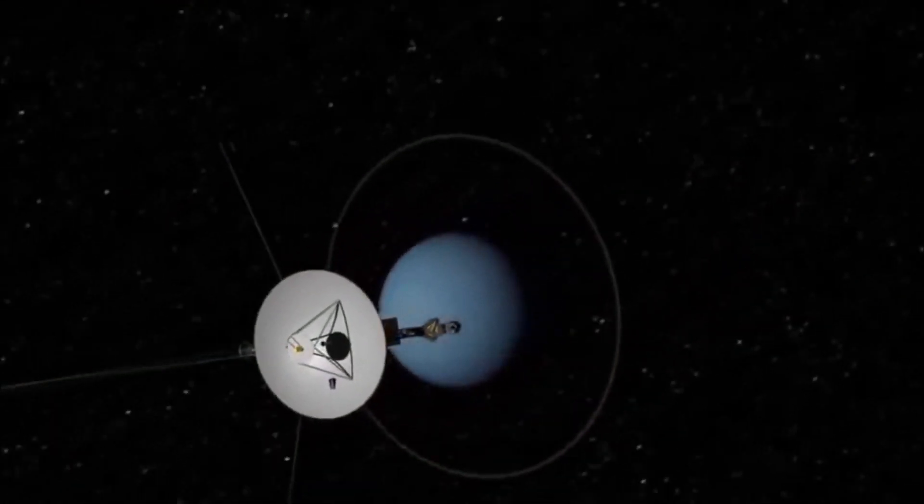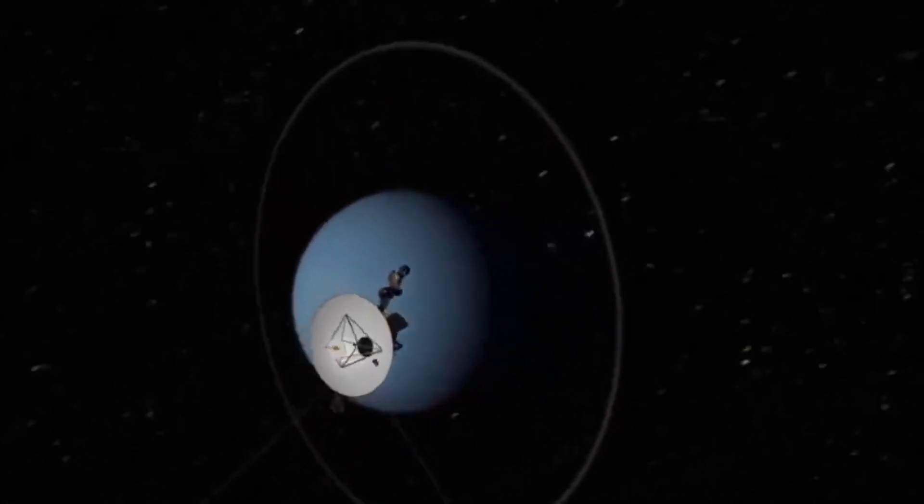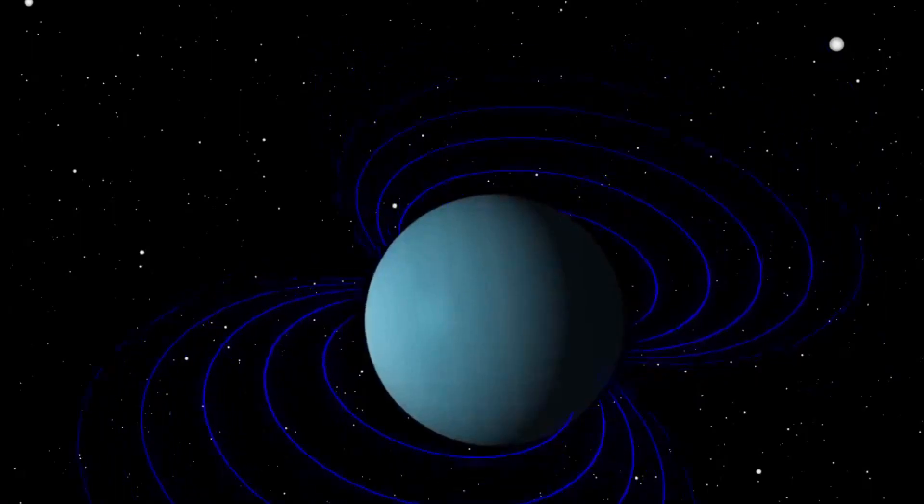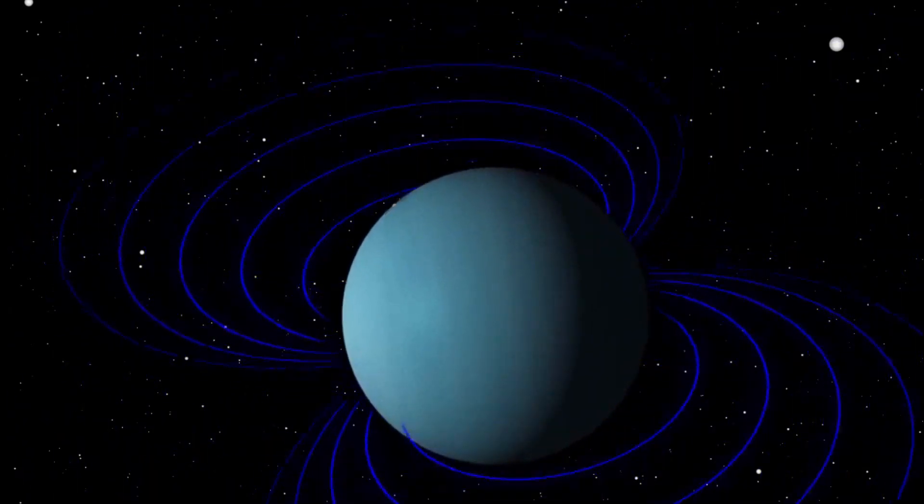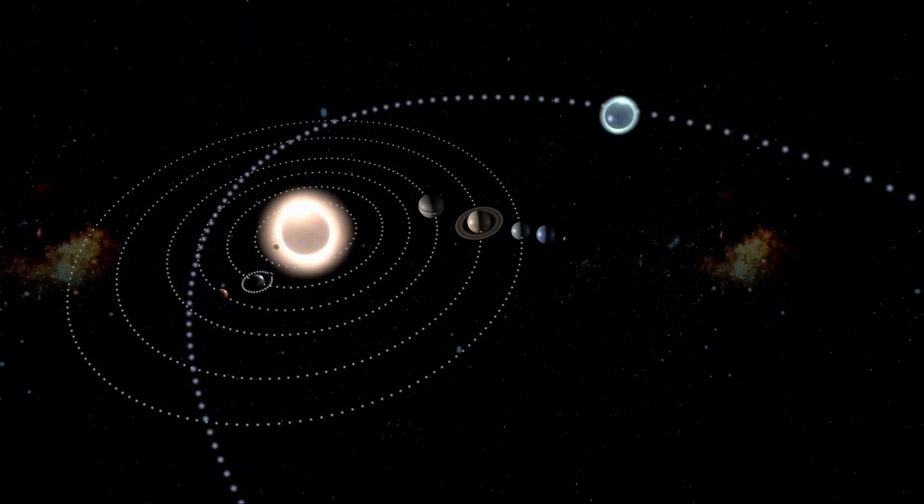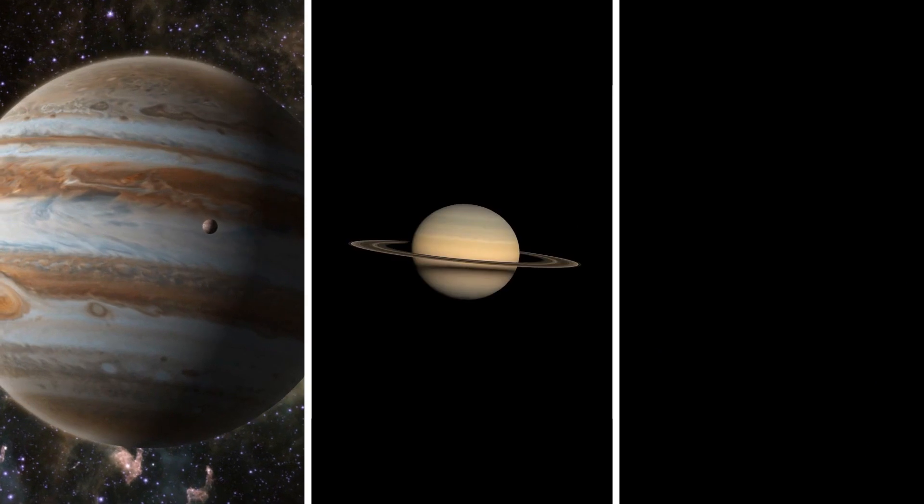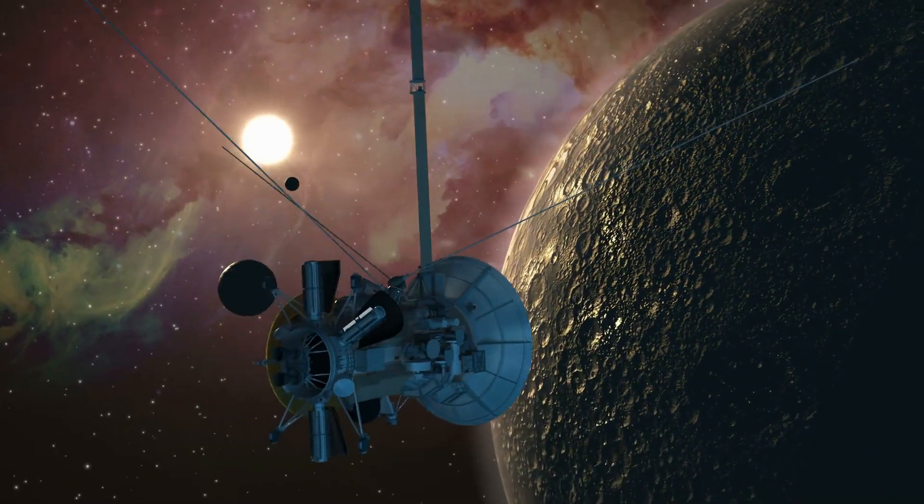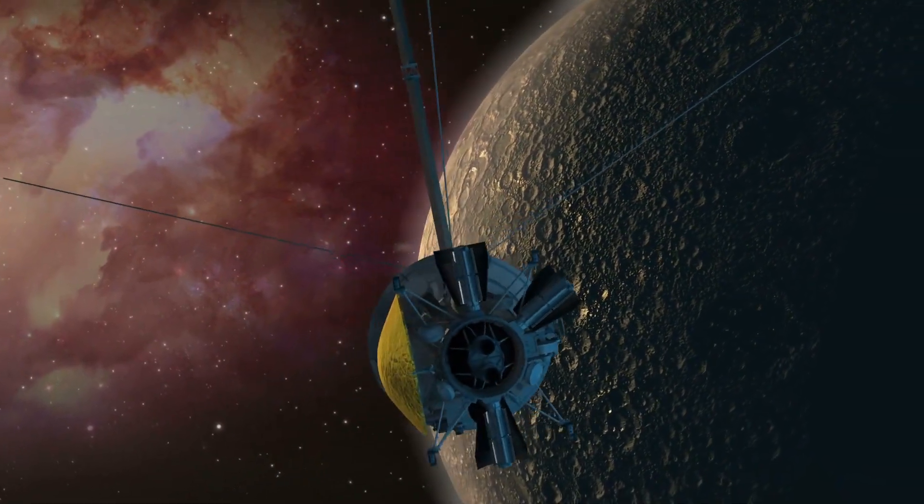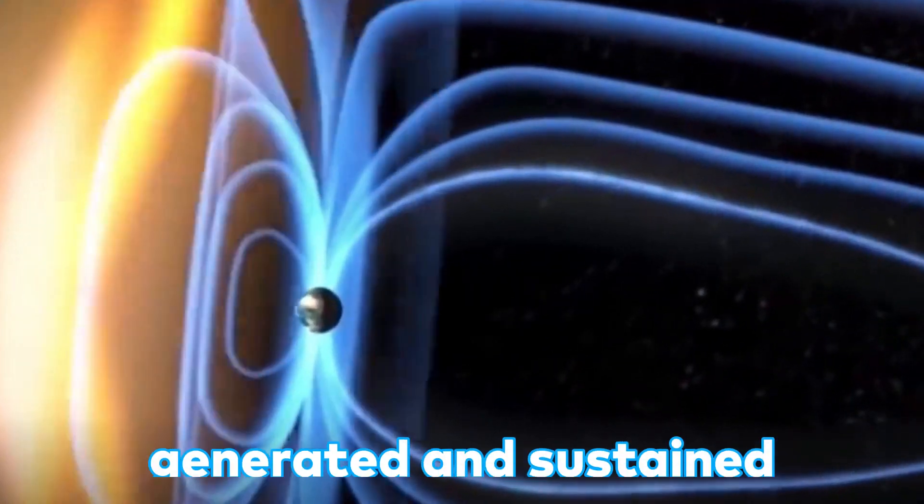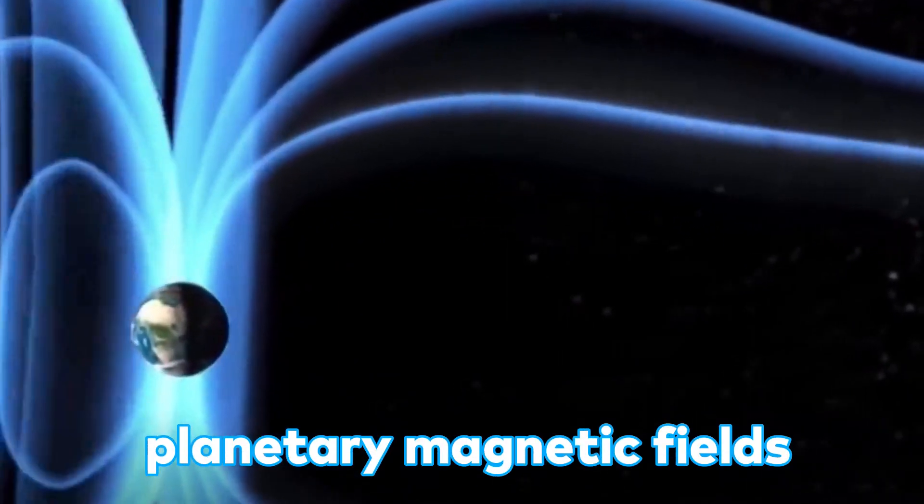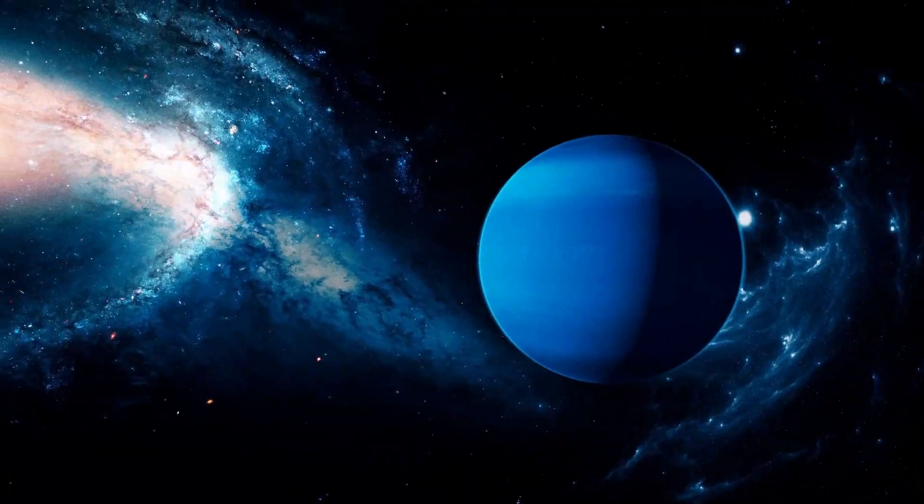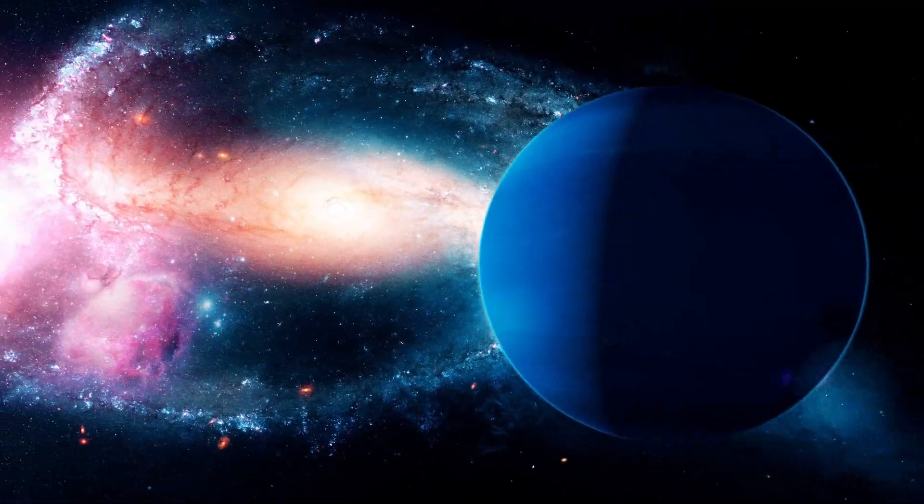Data collected by Voyager 2 showed that Uranus had a strong, tilted and offset magnetic field, which is much different from the magnetic fields of the other giant planets in the solar system: Jupiter, Saturn and Neptune. The discovery was also significant because it helped to shed light on the process that generated and sustained planetary magnetic fields and provided new insights into the structure and dynamics of Uranus itself.